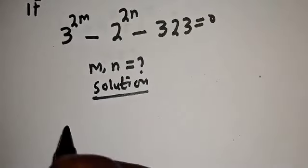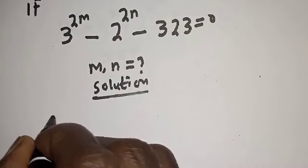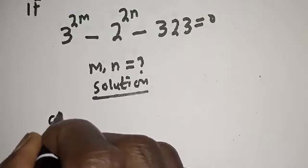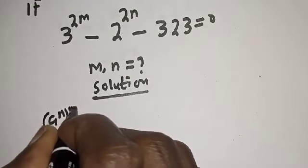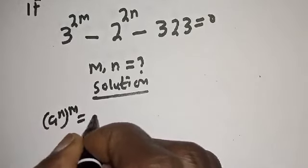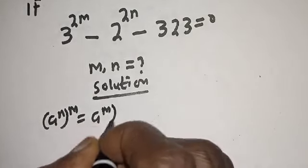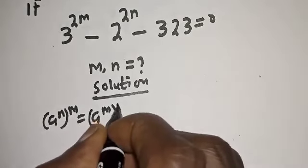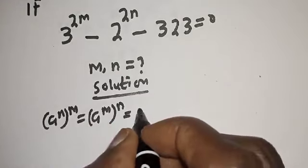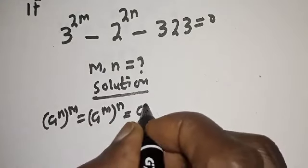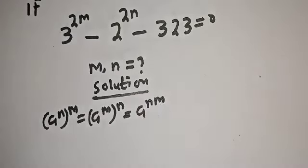Take note of this exponential rule: a raised to power n, to the power of m, is equal to a raised to power m, to the power of n, which equals a raised to power nm.